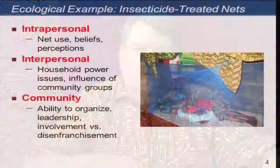At the intrapersonal level — the individual — what we're concerned about is what do they think about nets? What do they think about malaria? Do they perceive this as a problem? Do they perceive themselves at risk? Do they think the nets are helpful? Do they think the nets are inconvenient, hot, lacking ventilation? What problems do they see at their own level?